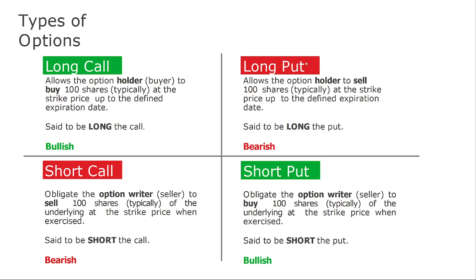There are two types of options: a call and a put. Based on those two, you can go long or short. When you are short, you are the option writer — you are selling it. When you are long, you are the buyer. If you believe the price is going bullish, you buy a long call. If the price ends up going up and it's bullish, you can take those 100 shares at the initially established price and then sell them afterward, taking the profit. If you put a long put, you believe the market is going downward — in a downtrend.